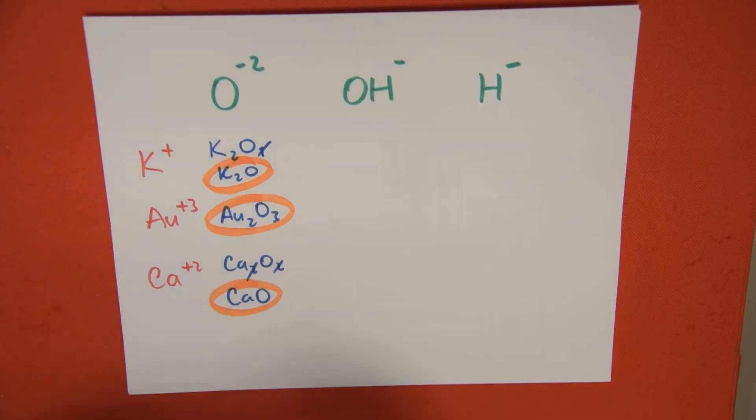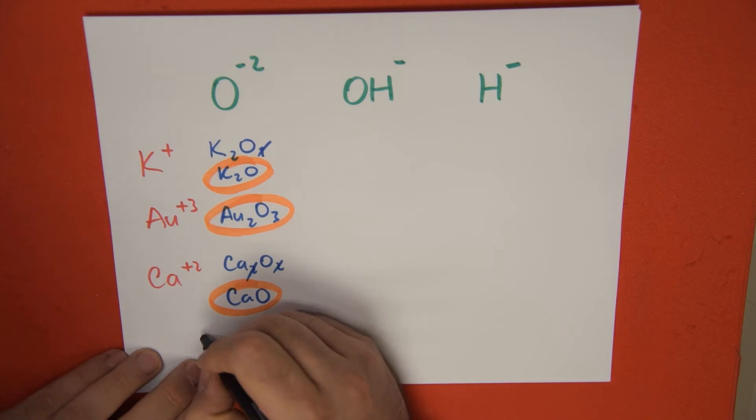And what are these called? Whenever I have a metal and I have an oxygen atom, we have something called oxides, which are metallic oxides. Or you can only call them oxides. That's good.